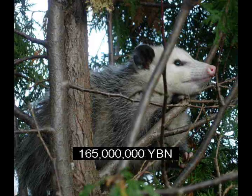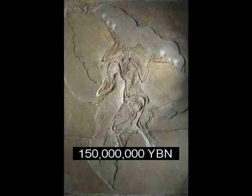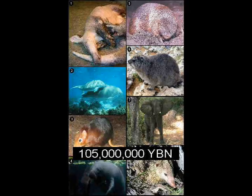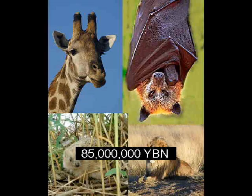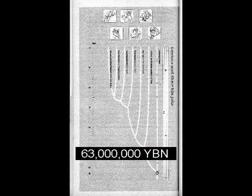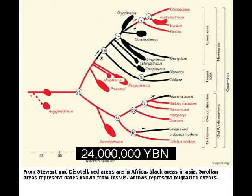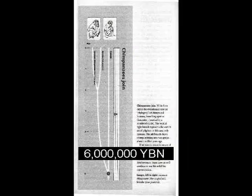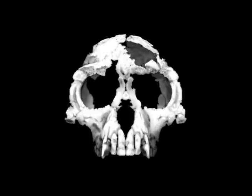Marsupials. Placental mammals. Birds evolve. First feather. Afrothere theories. Laurasia theories. Rodents. Primates. Opposable thumb. Primate loses tail. Chimpanzees. Ardipithecus — earliest hominid. Primates walk.